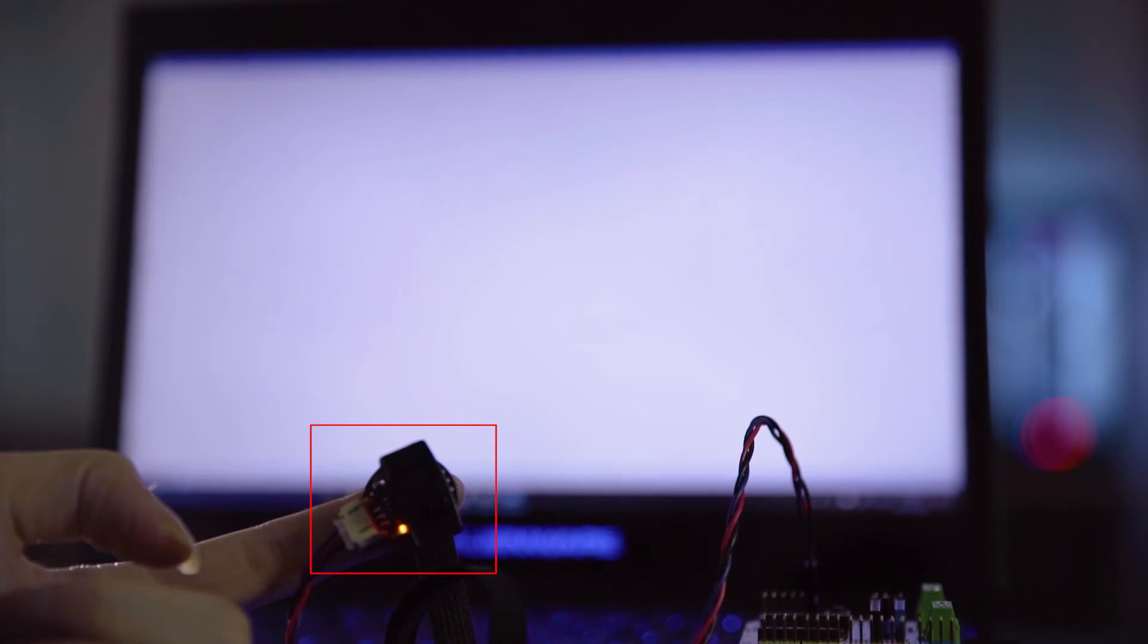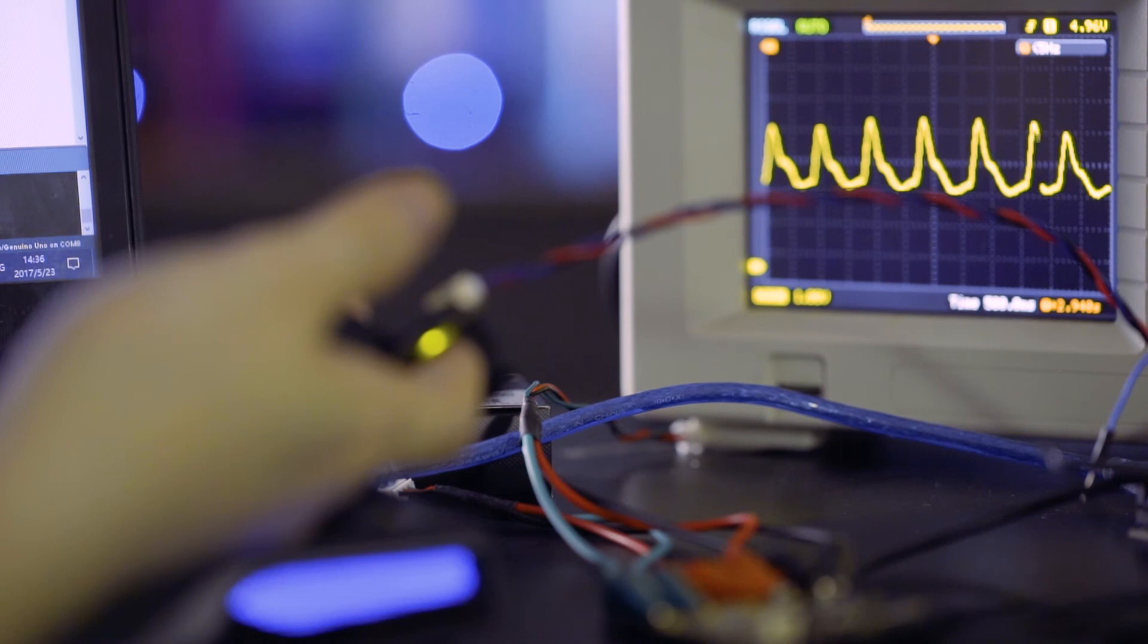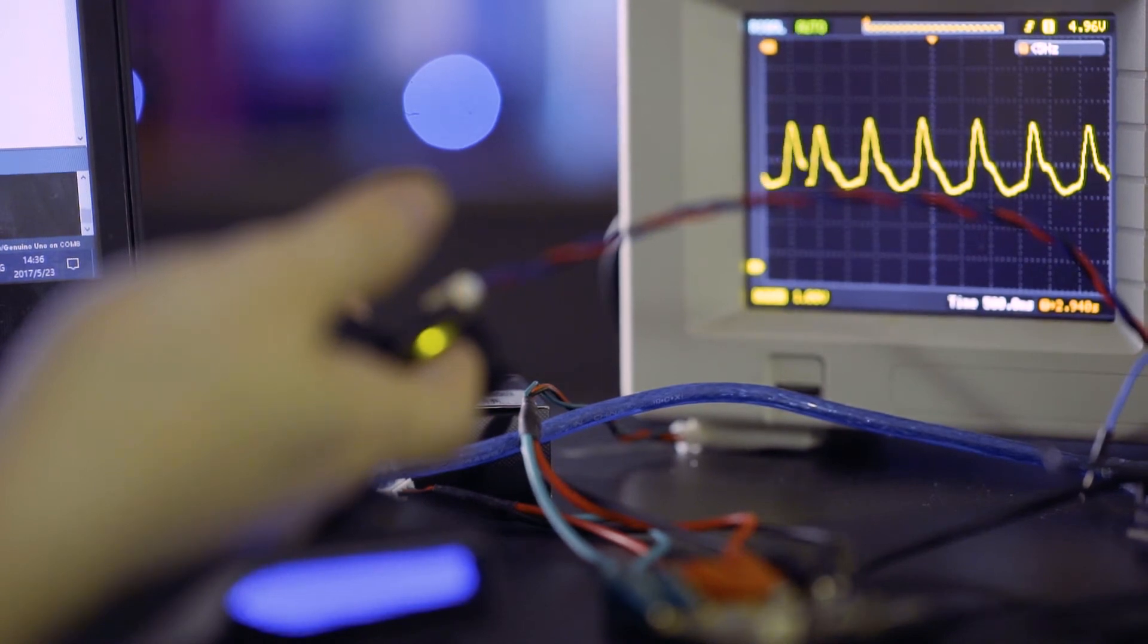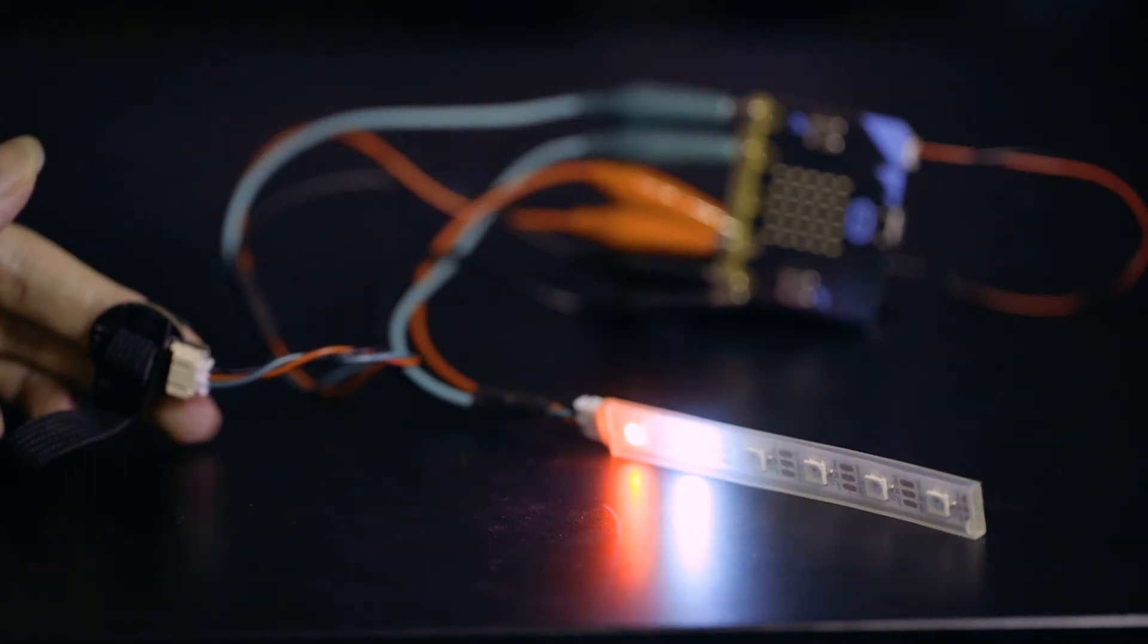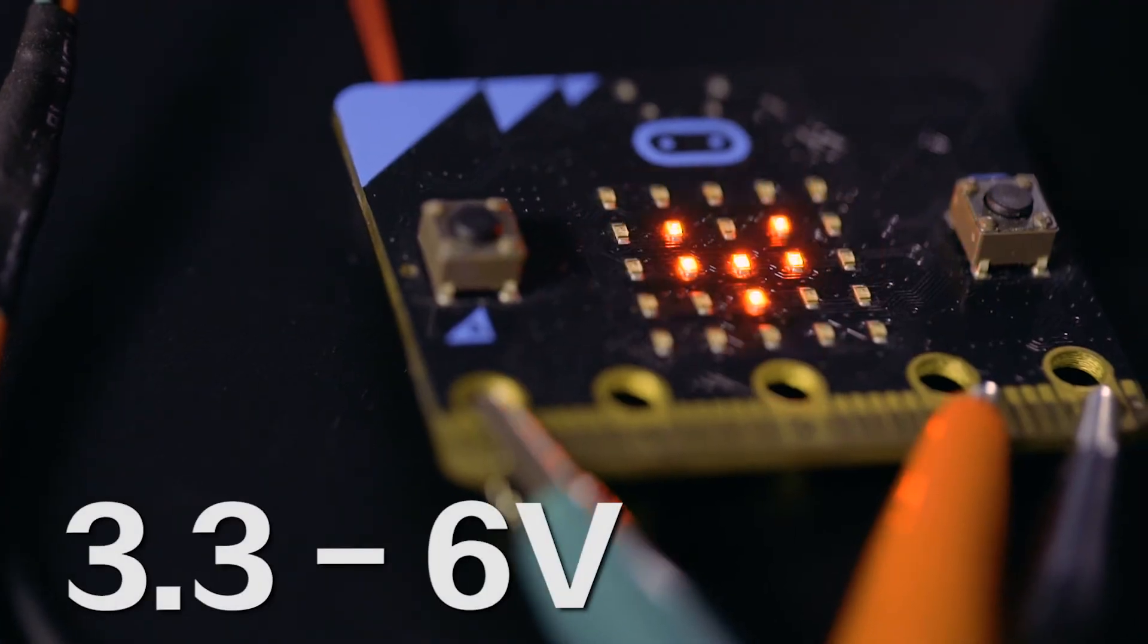Meanwhile, the onboard LED also blinks at the pace of the heartbeat. We can also read the value from devices such as an oscilloscope, but we have to make sure the power supply doesn't exceed its 3.3 to 6 volt rated voltage.